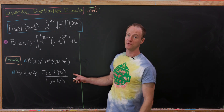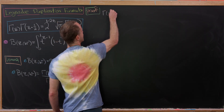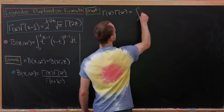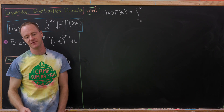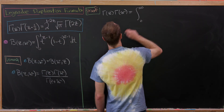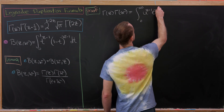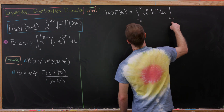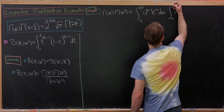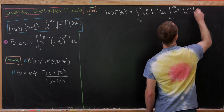We'll start by proving this statement. So we have gamma(z) times gamma(w), and we'll rewrite each using the integral definition of the gamma function. So we have the integral from 0 to infinity of u^(z-1) e^(-u) du, times the integral from 0 to infinity of v^(w-1) e^(-v) dv.